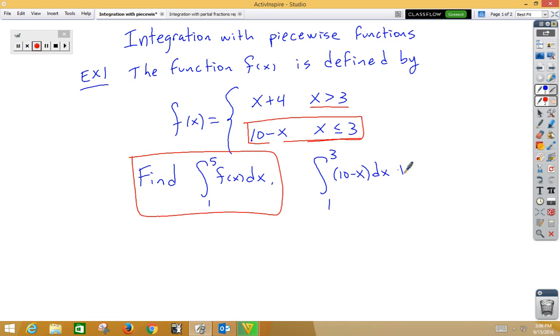Then we add the integral from 3 to 5. Notice the top function starts at 3, so that'll work for 3 to 5, and we would integrate x plus 4 dx. So we had to break up our integral into two pieces because the function had two pieces.